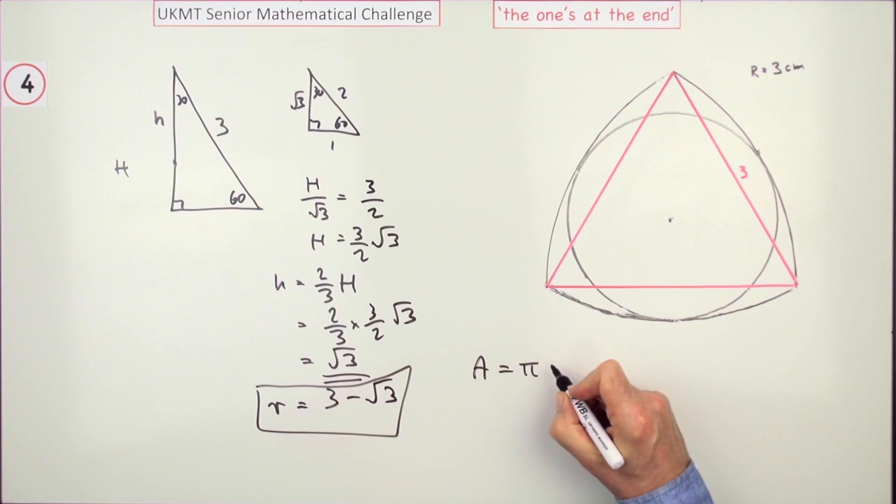Now you've got the radius, you get the area quite easily. Area is πr². π times (3 - √3)². π times - square the first would be 9, twice the product so that's 6√3.